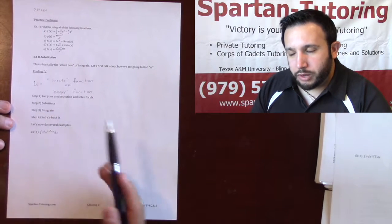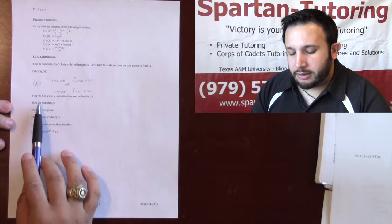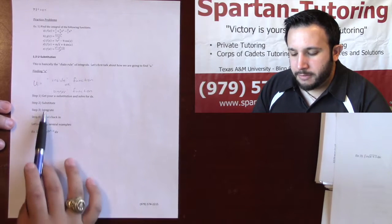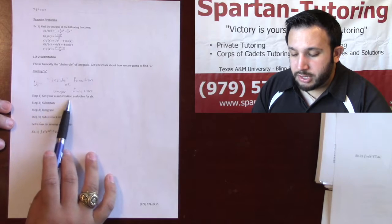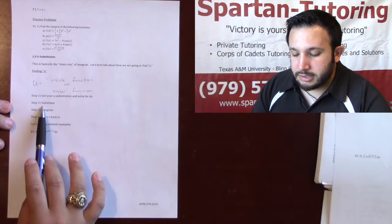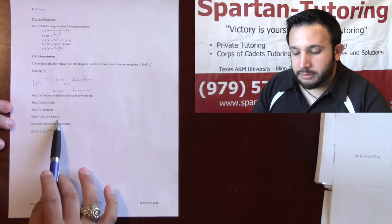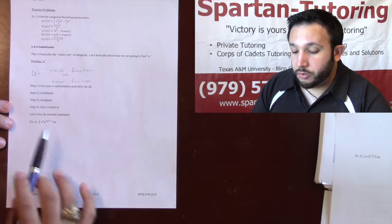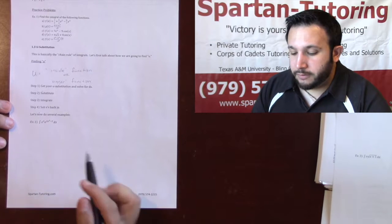What I like to do is break this down into a four-step process because there's going to be a lot of writing. You're going to get your u-substitution, solve for dx, substitute, integrate, and sub back in. Before I run through each one, though, let's make sure that we're perfect at finding u.